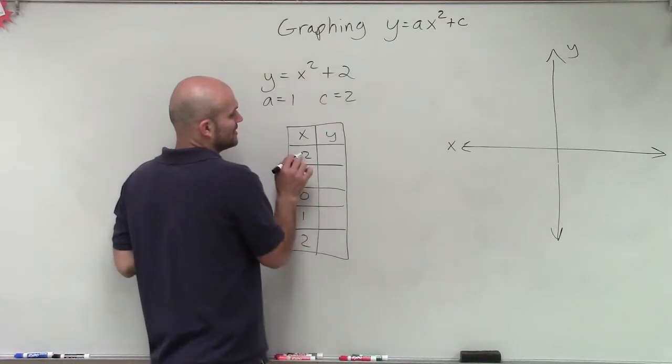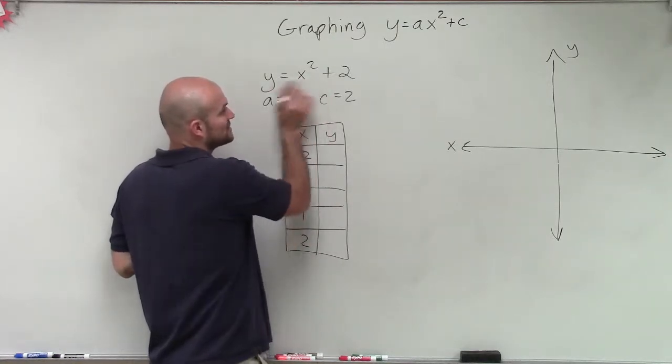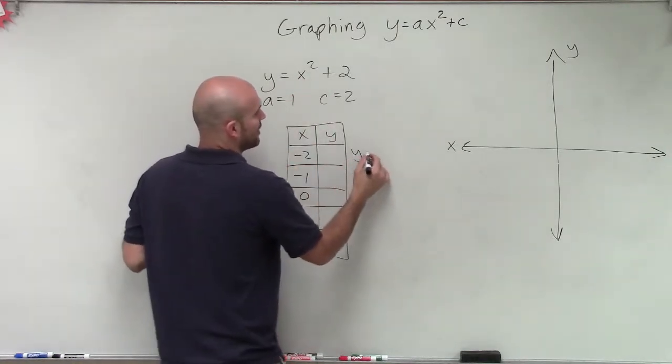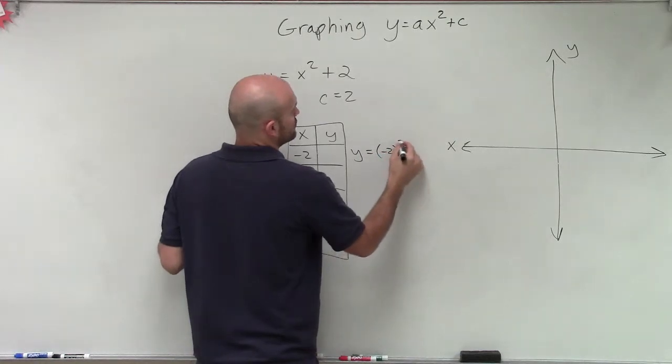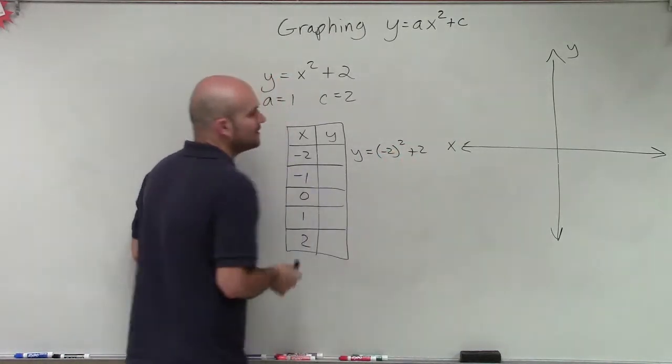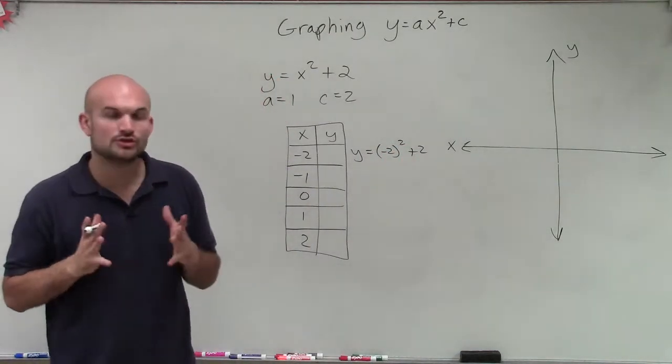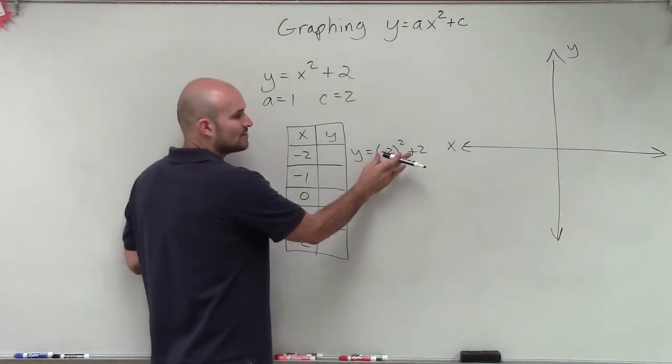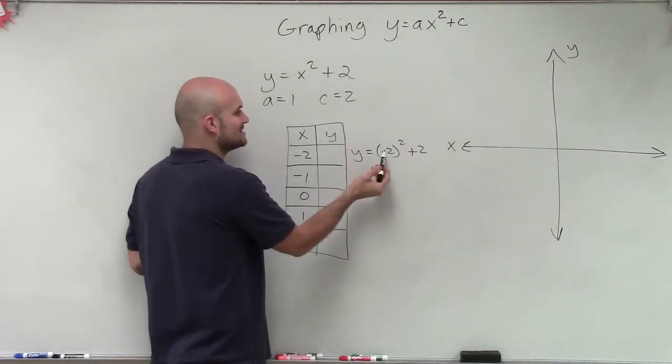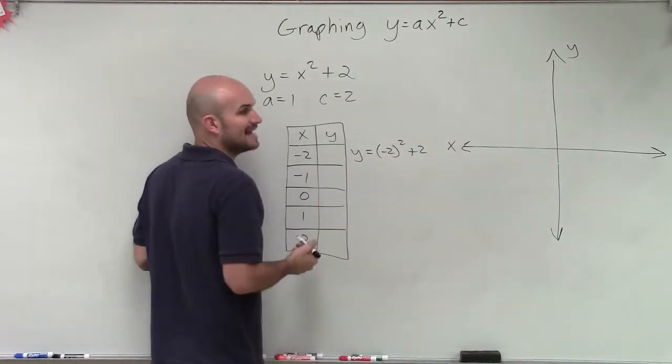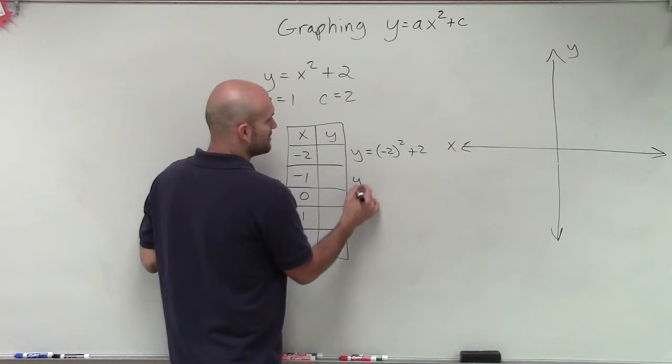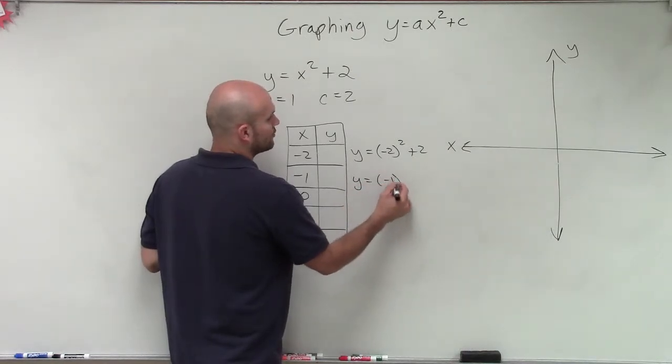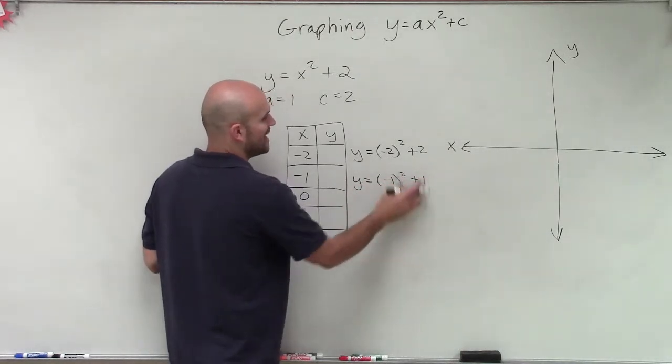So to do that, I need to plug these x-coordinates in into my equation to find the y-value. So I have y equals negative 2 squared plus 2. Now, notice my use of parentheses. I'm putting parentheses around this when I square it, because I'm not doing 2 squared and then multiplying by negative 1. I'm actually squaring negative 2 squared. And what's really important about that is, well, the squaring function is always going to make it positive, right?